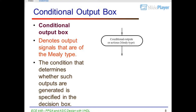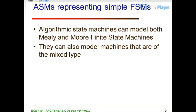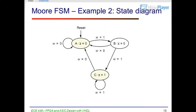Moore FSM: ASMs representing simple FSMs. Algorithmic State Machines can model both Mealy and Moore Finite State Machines. They can also model machines that are of the mixed type. Example 2: Moore FSM State Diagram.